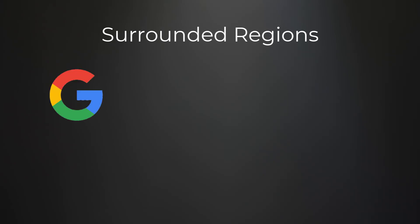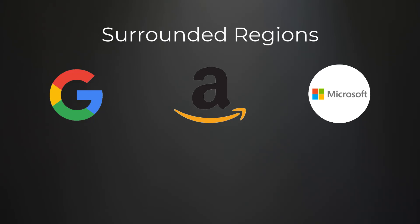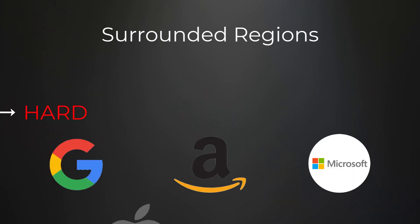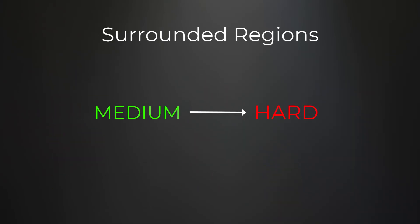Today we're going over the graph problem 'Surrounded Regions.' This problem is currently asked at Google, Amazon, Microsoft, Apple, and Bloomberg. It is medium to hard difficulty because you have to think outside of the box to solve it, and there are multiple approaches.